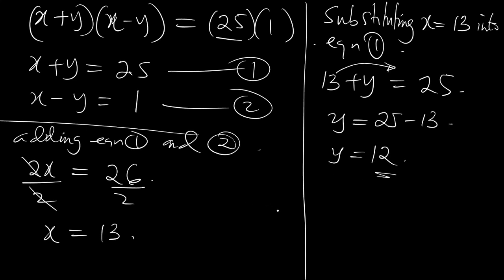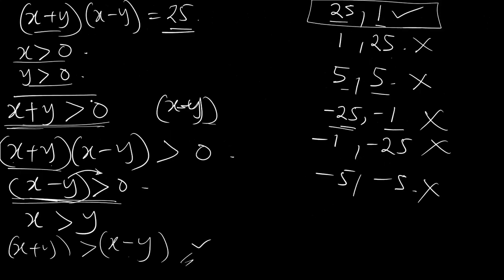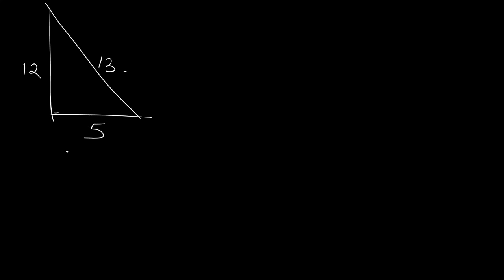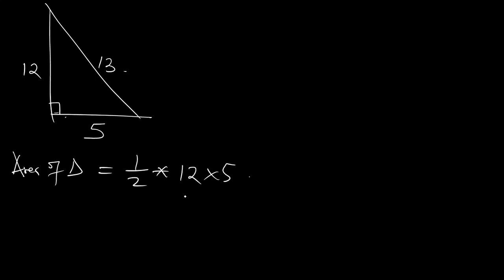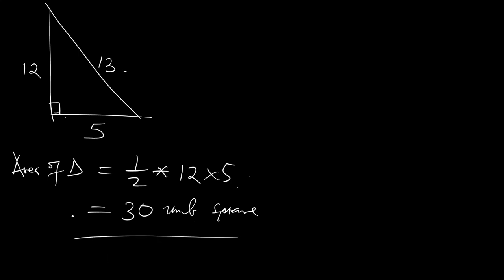From our drawing, AB = Y = 12, AC = 5, and BC = X = 13, with a 90° angle at B. The area of the triangle is ½ × 12 × 5. That is 60 ÷ 2 = 30 square units. Since the unit was not given, the answer is 30 units squared. This is the final answer.